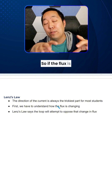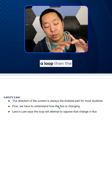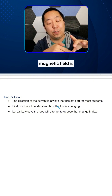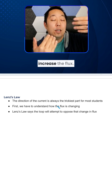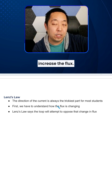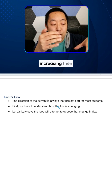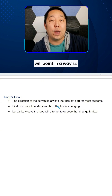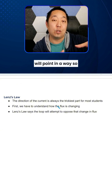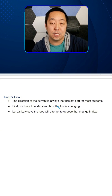So if the flux is decreasing through a loop, then the magnetic field is going to be in the same direction to try to increase the flux. If the flux is increasing, then the magnetic field will point away so that the overall flux is going to be less.